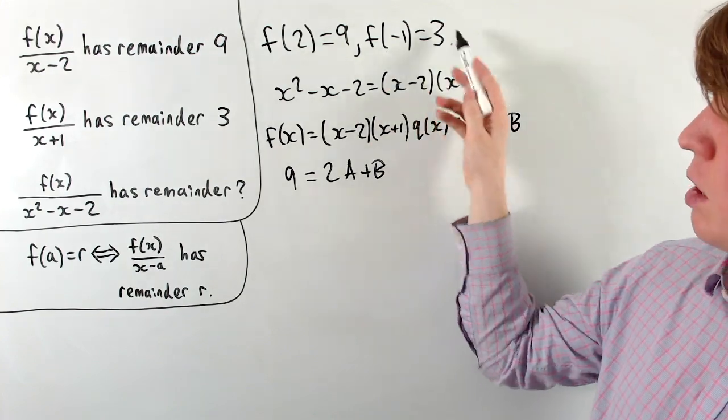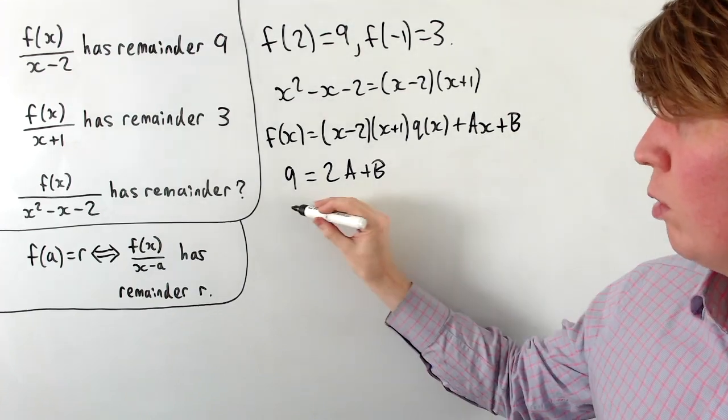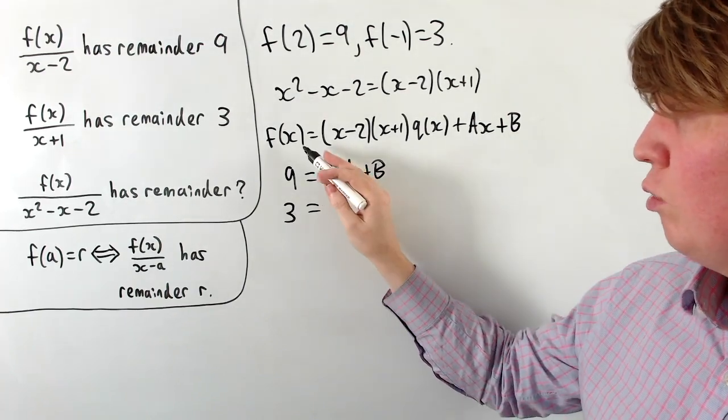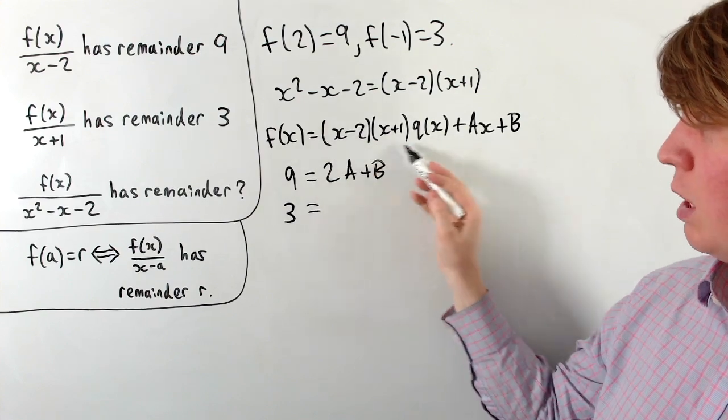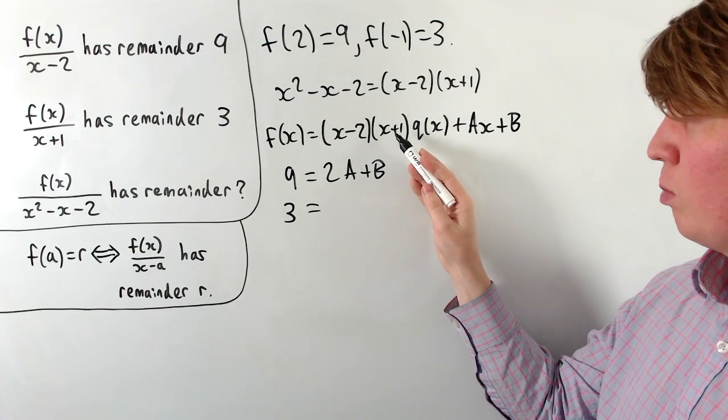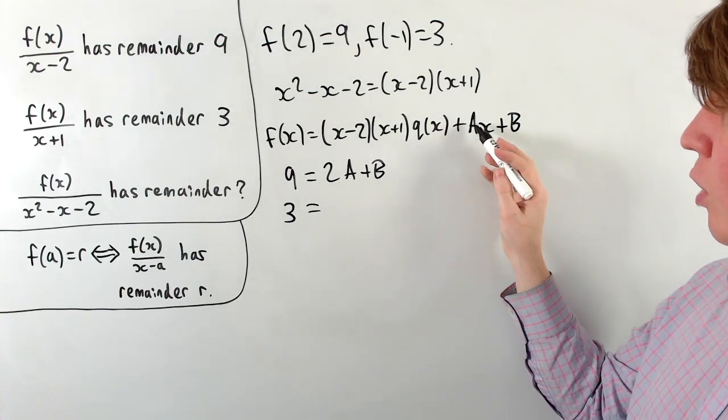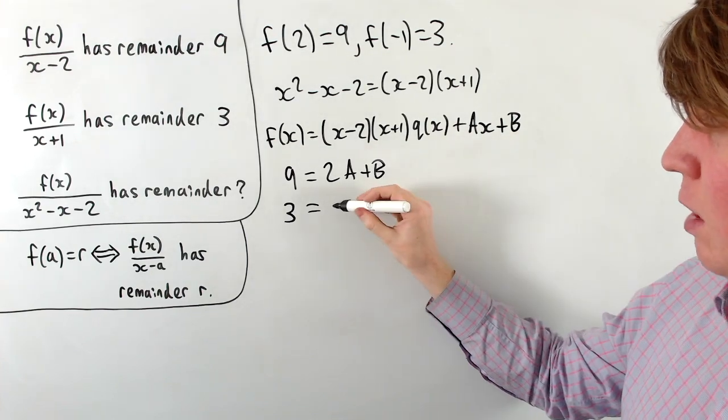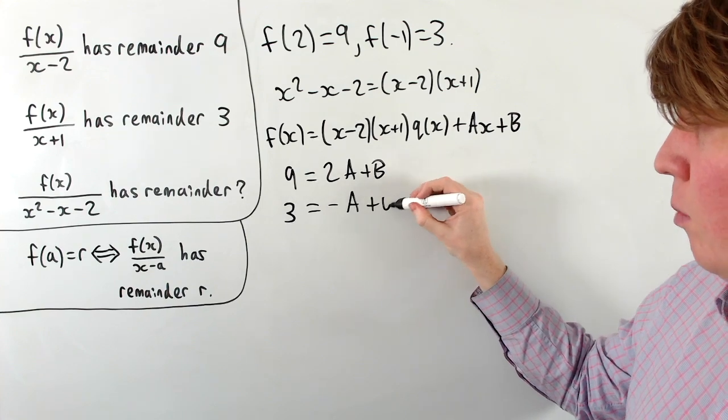And similarly, using this information that f(-1) is 3, we can write f(-1) is 3, substituting in negative 1, all of this term disappears again, it just becomes 0, because x plus 1 is 0 there. And then we've got a times negative 1 plus b, so we'll write this negative a plus b.